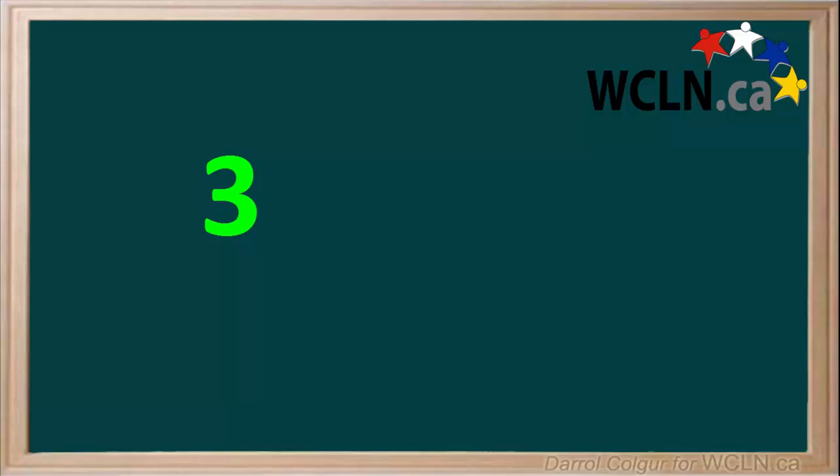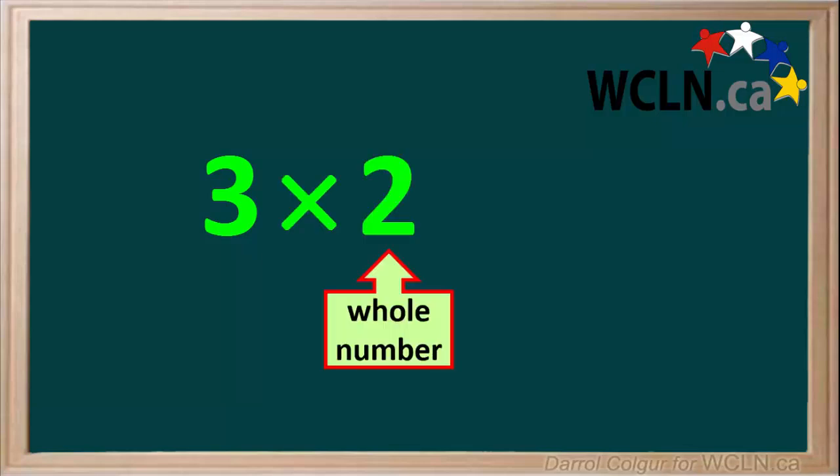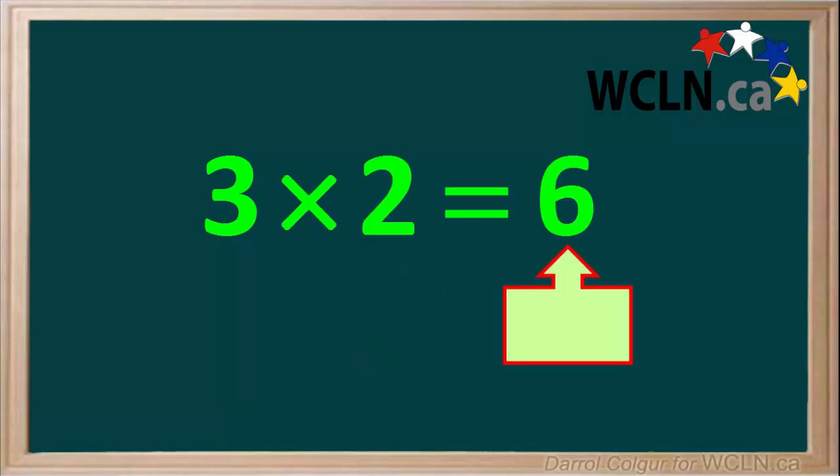For example, if we have the number 3 and we multiply it by the whole number 2, the answer is 6, which is larger than the original number 3.